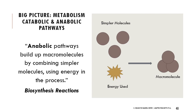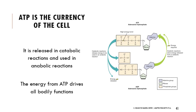ATP — adenosine triphosphate — is the currency of the cell. The tri part is important: we have three inorganic phosphate groups. When we pop one off, we convert ATP to ADP (adenosine diphosphate), releasing energy. We then spend energy to rebuild those ATP stores. The energy from ATP drives all bodily functions.